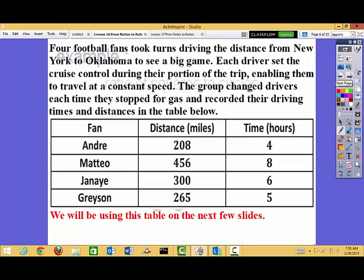Four football fans took turns driving a distance from New York to Oklahoma to see a big game. Each driver set the cruise control during their portion of the trip, enabled him to travel at constant speed. The group changed drivers each time they stopped for gas and recorded their driving times and distance in the table below. So let's just look at this table before we begin. What this is saying is Andre, he drove 208 miles, took him four hours. Then they got out and Matteo was the driver. He drove 456, but he drove eight hours. That's why he drove so much more.